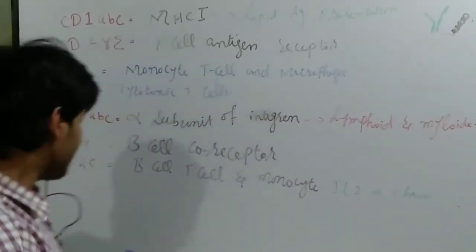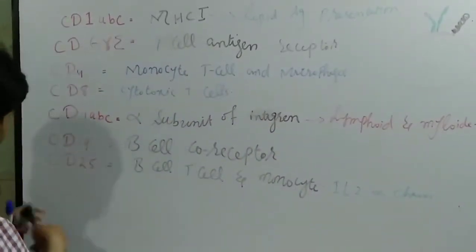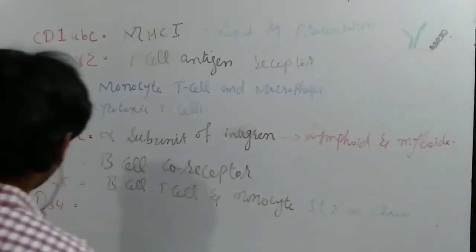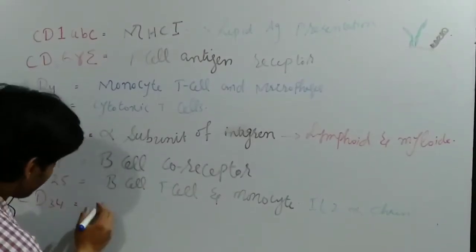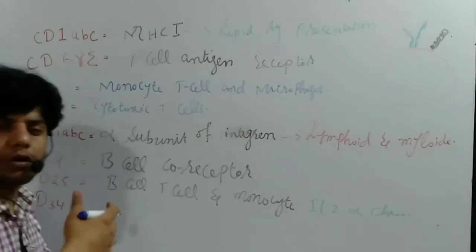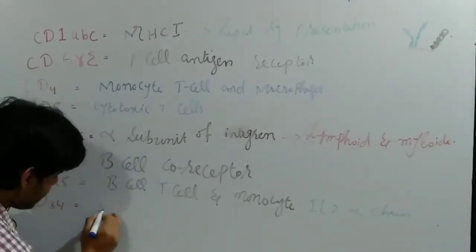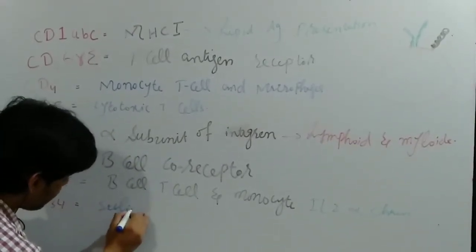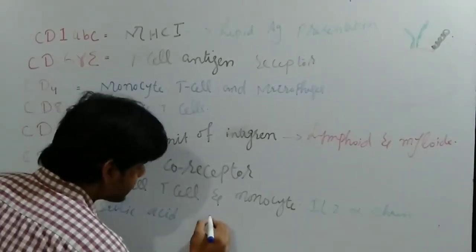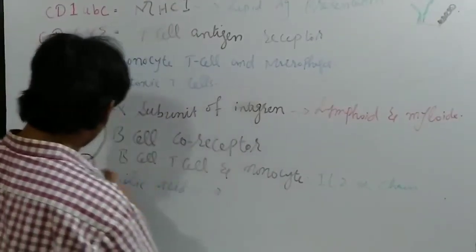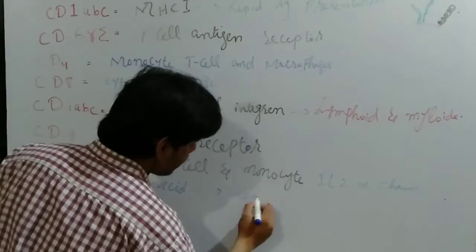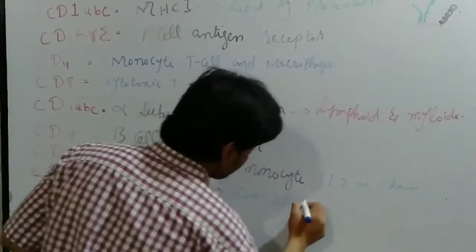Then we have CD34. CD34 is specially used against sialic acid. These CD34 molecules are actually stem cell proteins.